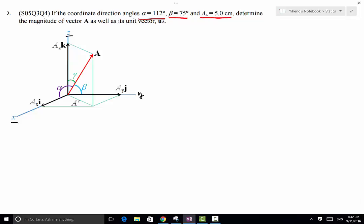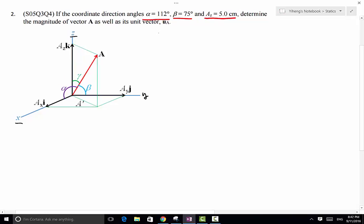So because we know there exists this relation between the three angles alpha, beta, gamma, that cosine alpha squared plus cosine beta squared plus cosine gamma squared equals to 1. Therefore we can solve for cosine gamma, which equals to square root of 1 minus cosine alpha squared minus cosine beta squared.